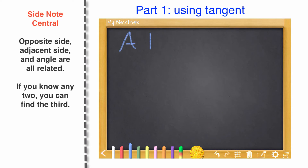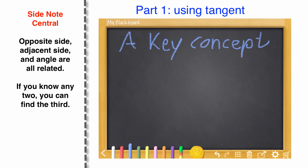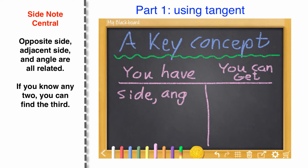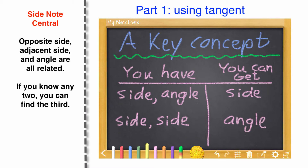Now for the main event — let's work with tangent. This is a key concept, a very important thing. If you have any two pieces of information in your triangle, you can find out the third. If you've got a side and an angle, you can find the other side. If you have a side and another side, you can definitely find the angle. It's a thing of beauty.